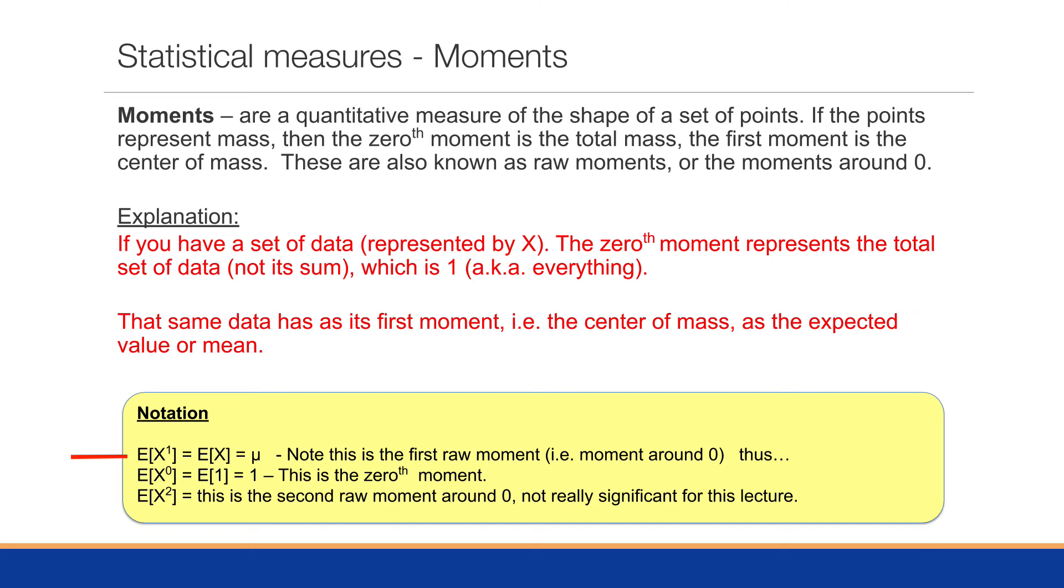Similarly, if we go in the opposite direction and we say X to the power of two, this would be the second raw moment around zero. And it's not really significant for this lecture, but we'll alter this in a moment.